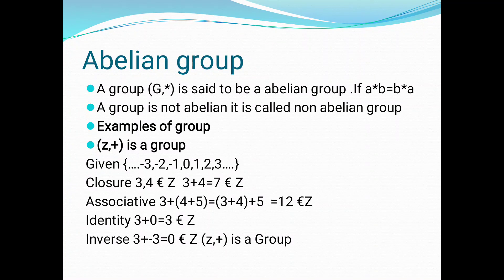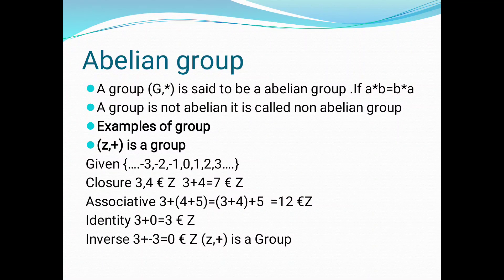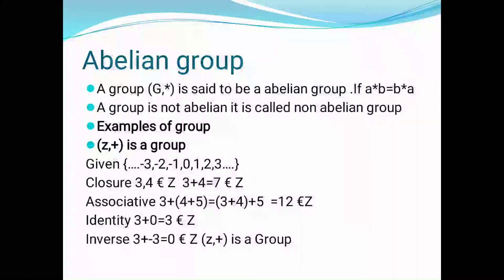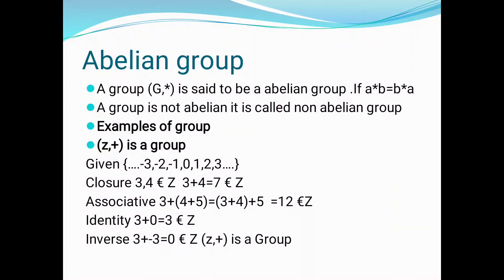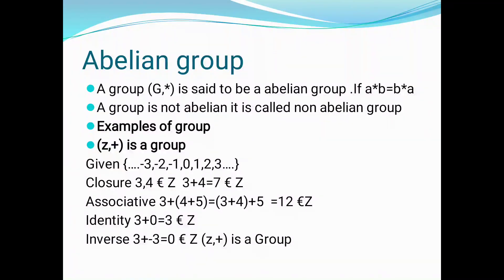The next property is associative. We take three elements in the set — the values a = 3, b = 4, and c = 5. Using the associative property: (3 + 4) + 5 = 3 + (4 + 5). We get both LHS and RHS values equal to twelve. Both values are the same, and twelve is contained in the set Z. This property is satisfied.